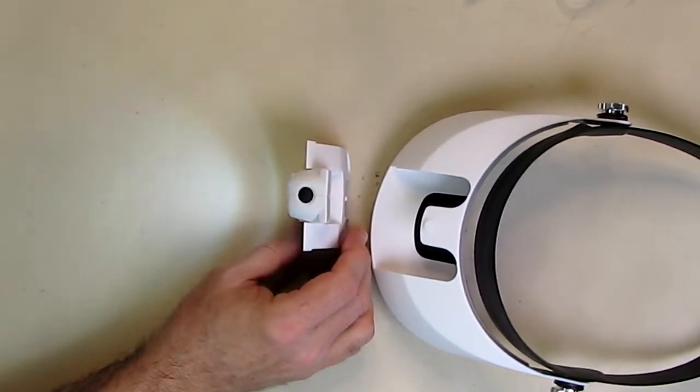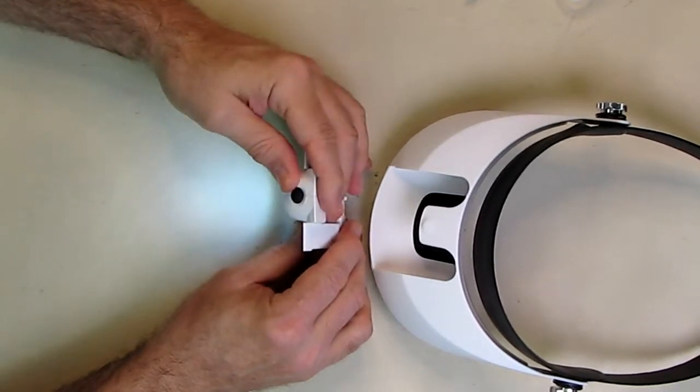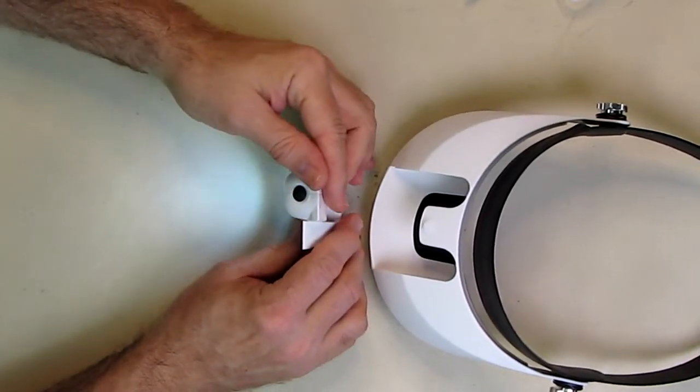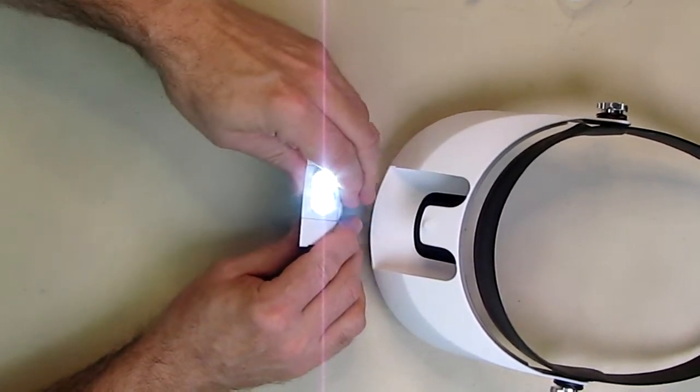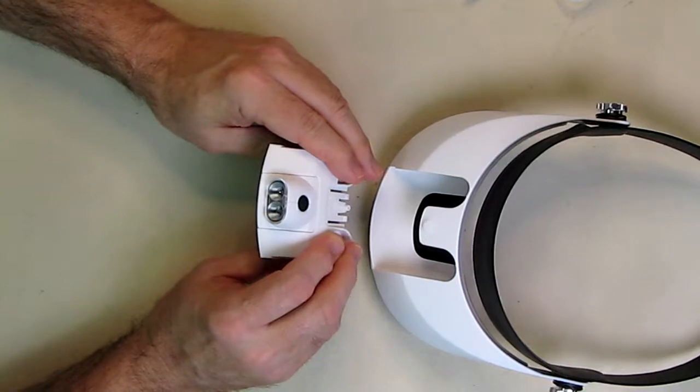It goes all the way down to about minus 45 degrees and all the way up to 90 degrees. So that's nice. And then you just push the button to turn it off.